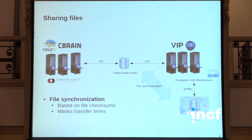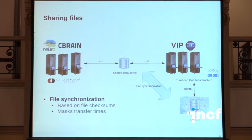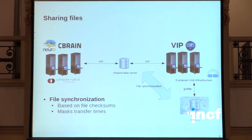The second thing we developed is file synchronization for data sharing. This turned out quite easy because C-Brain is based on standard technologies including SSH for data storage. We developed a file synchronization mechanism between an SSH data server and the European grid infrastructure. We chose file synchronization because it can mask data transfers. Rather than transferring files on demand — where you'd need to transfer data, wait for it, then launch your pipeline — you define a shared data directory, drop data there, it's synchronized over the weekend, and when you return your files are ready. The synchronization itself is based on comparison of checksums.